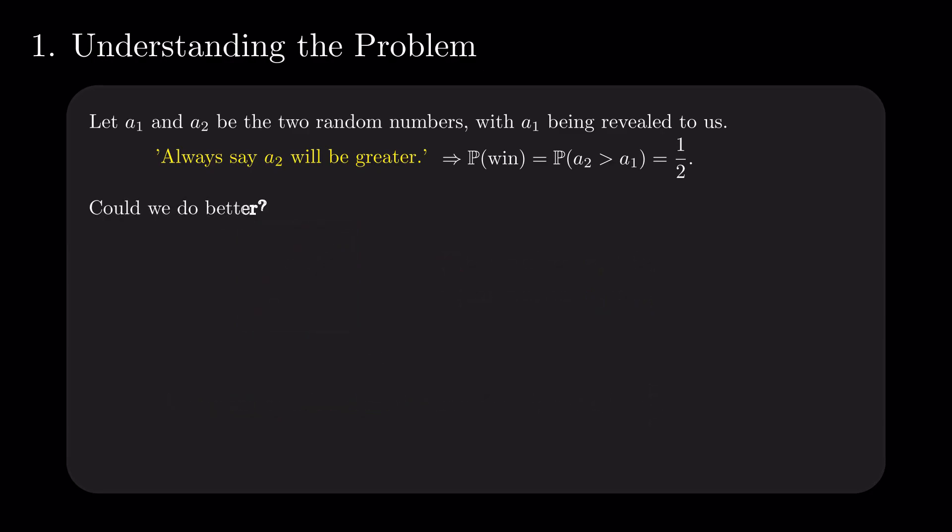The strategies are indeed silly, but can we strive to do better? How can we increase our odds above mere chance? Until now, we have not included in our rationing the fact that we know the value of A1. It is tremendously relevant information.